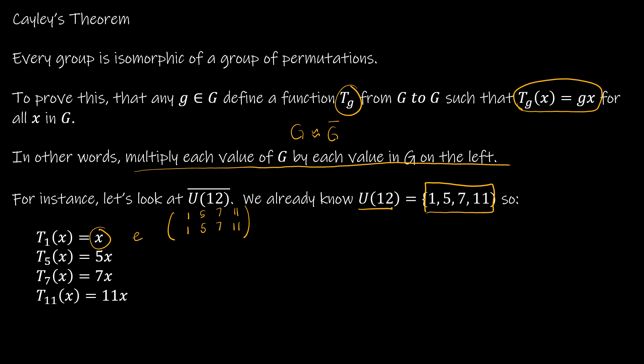Now let's look at t_5. I multiply each element by five on the left. One times five is five, so one maps to five. Five times five is twenty-five, and twenty-five mod twelve is one, so five maps to one — closing that cycle. Then five times seven is thirty-five, and thirty-five mod twelve is eleven, so seven maps to eleven, closing that cycle.